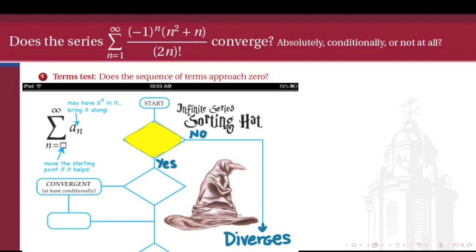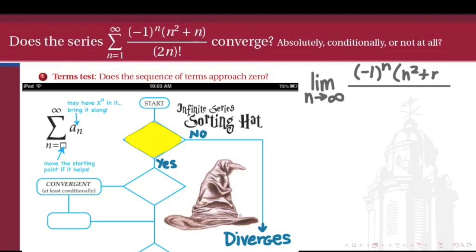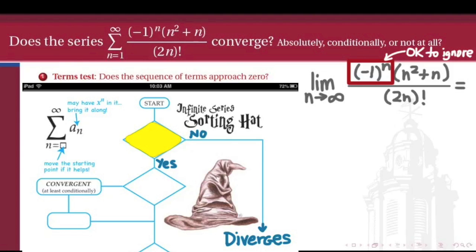In our sorting hat, the first test we usually do is the terms test. Does the sequence of terms of this series approach 0? If it does not, we can immediately say that this series diverges. So we'll test the limit as n goes to infinity of the sequence of terms. This is not quite so easy because of the factorial in the denominator. So let's make our life a little easier by ignoring the negative 1 to the n in the numerator. Whether or not the sequence of terms approaches 0 does not depend on whether the signs oscillate. So let's figure out the limit as n goes to infinity of n squared plus n over the quantity 2n factorial.